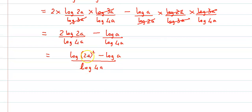Now 2a the whole square is 4a squared, so this becomes log of 4a squared minus log of a upon log of 4a. Now there's subtraction here.